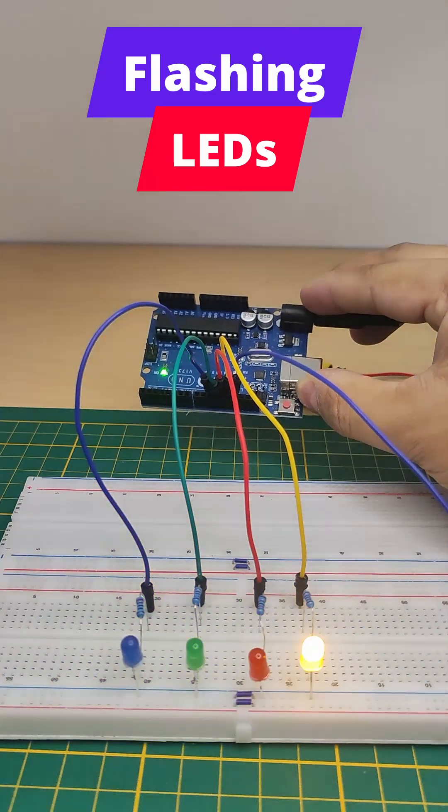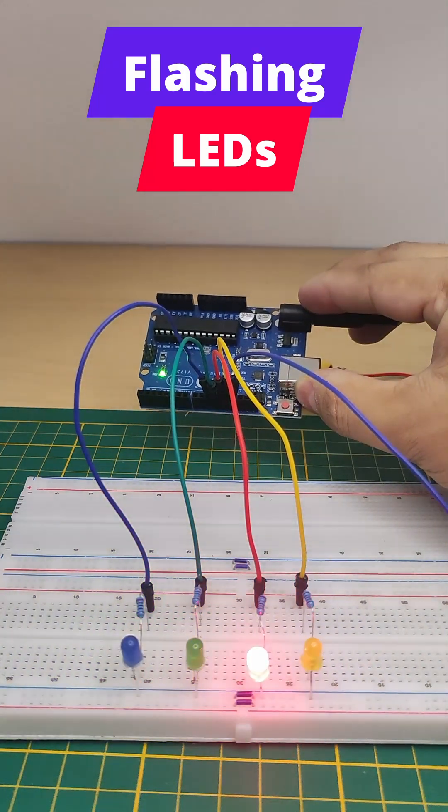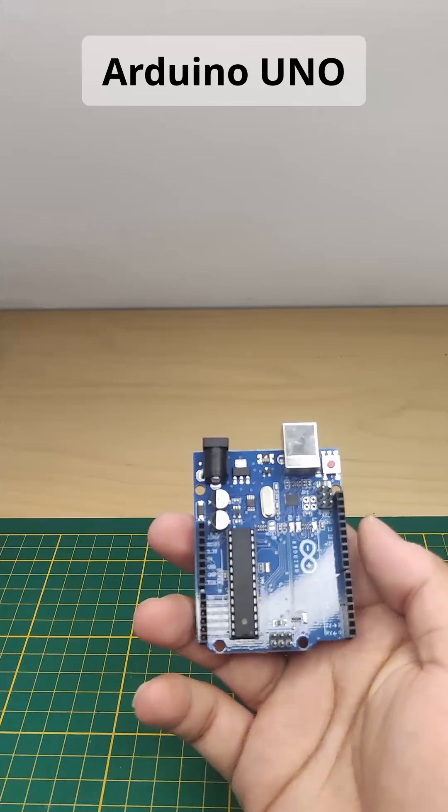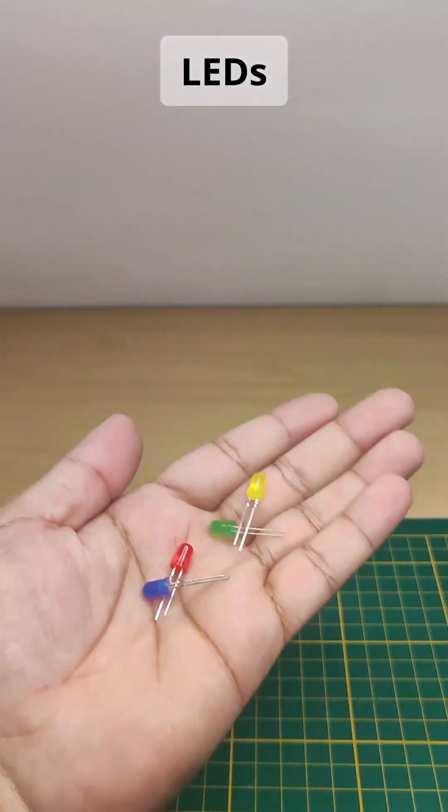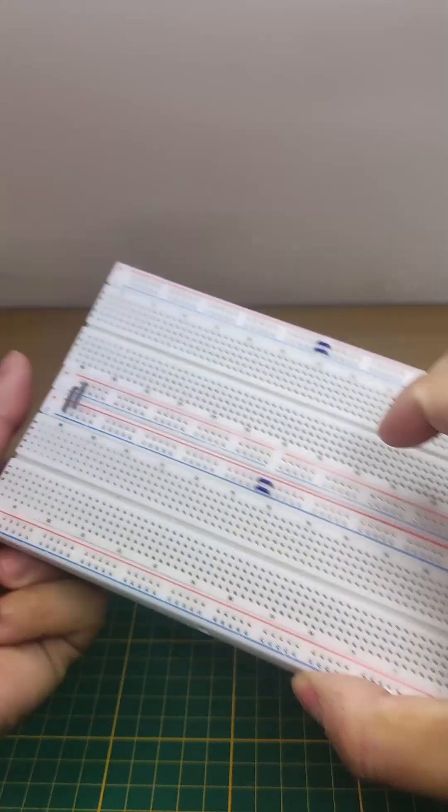Today I'm going to show you how to make LED lights blink using an Arduino board. For that you will need an Arduino board, some LED lights, and a breadboard.